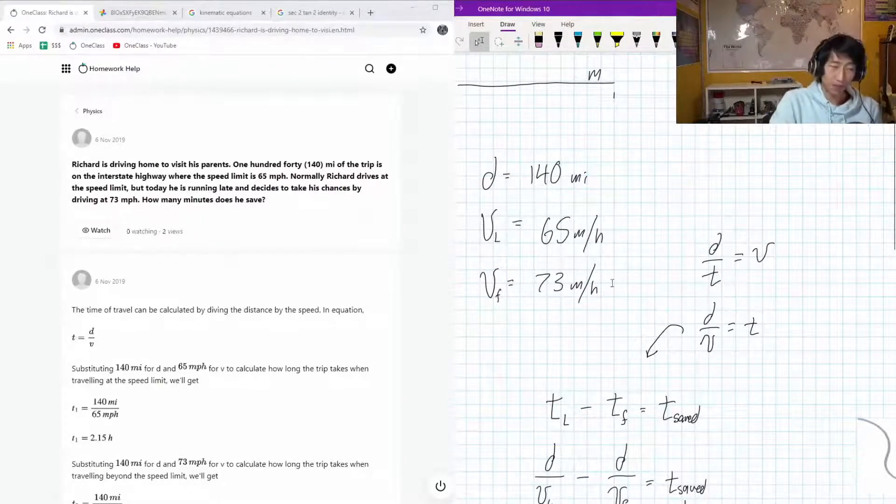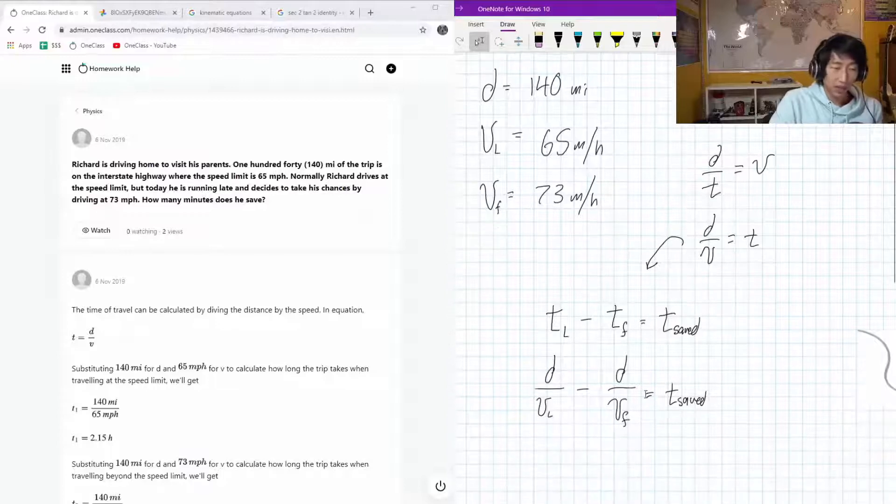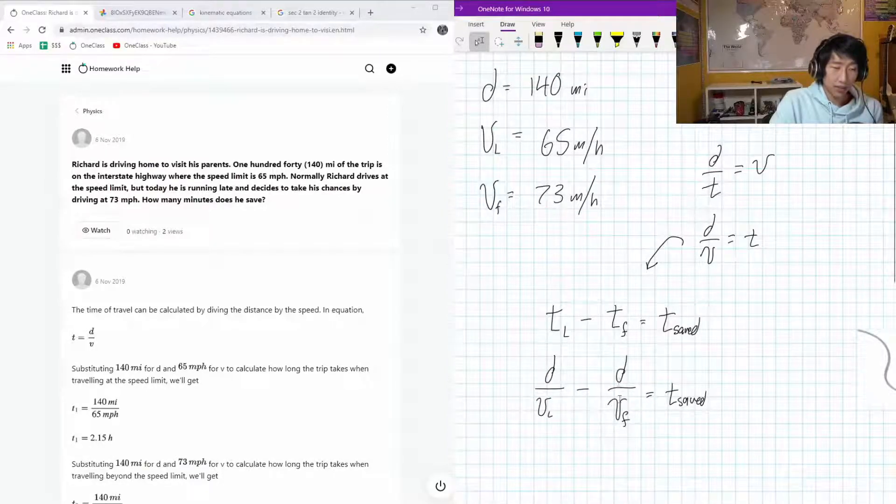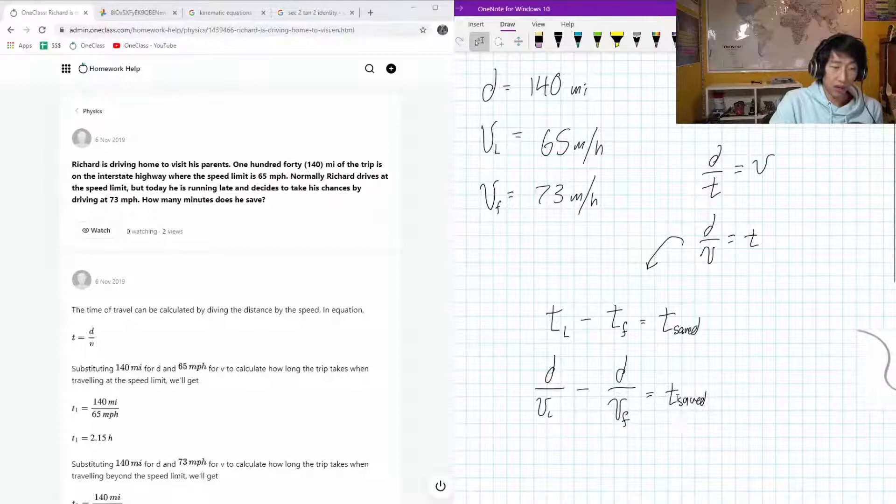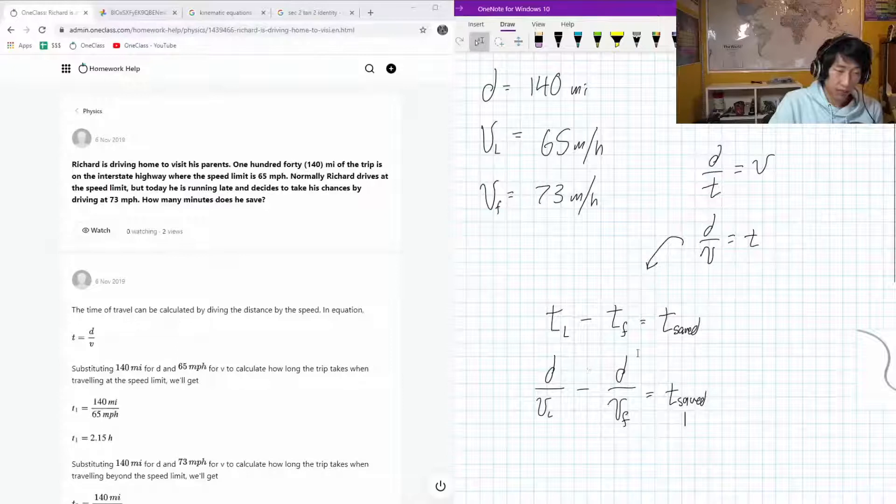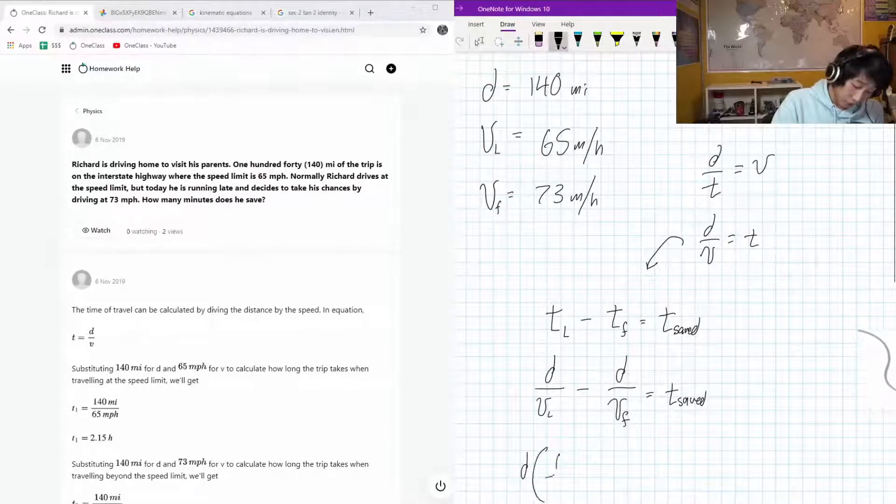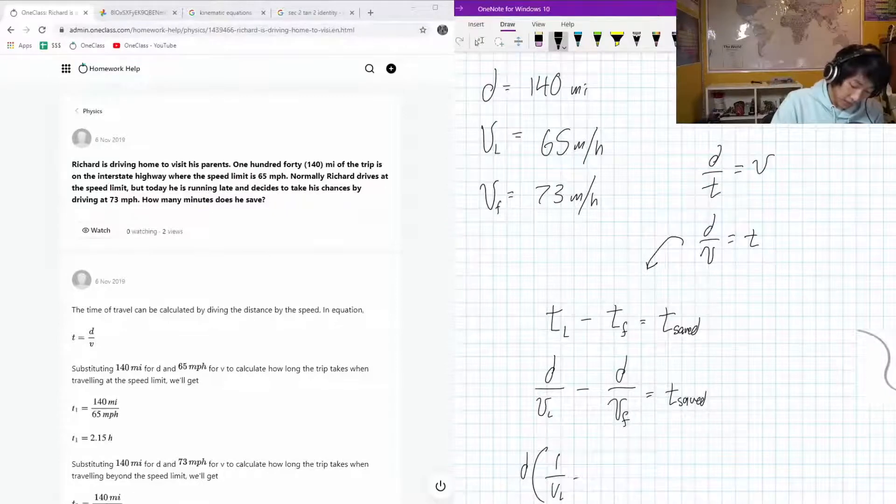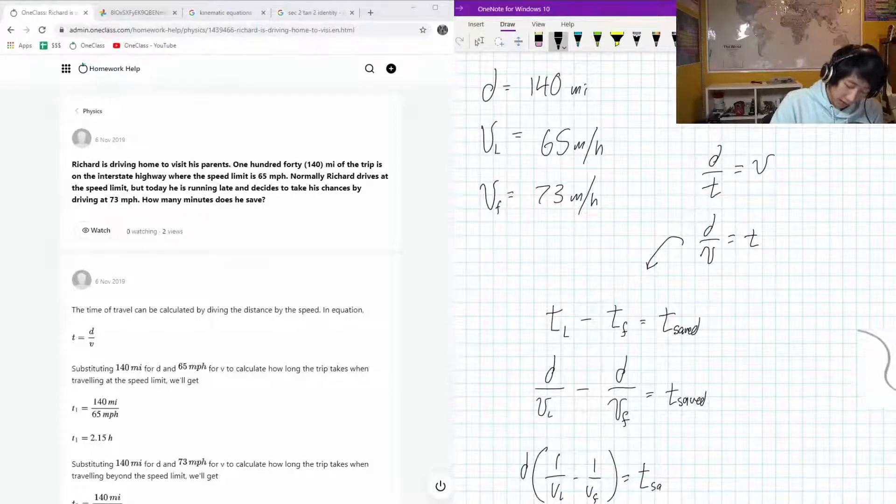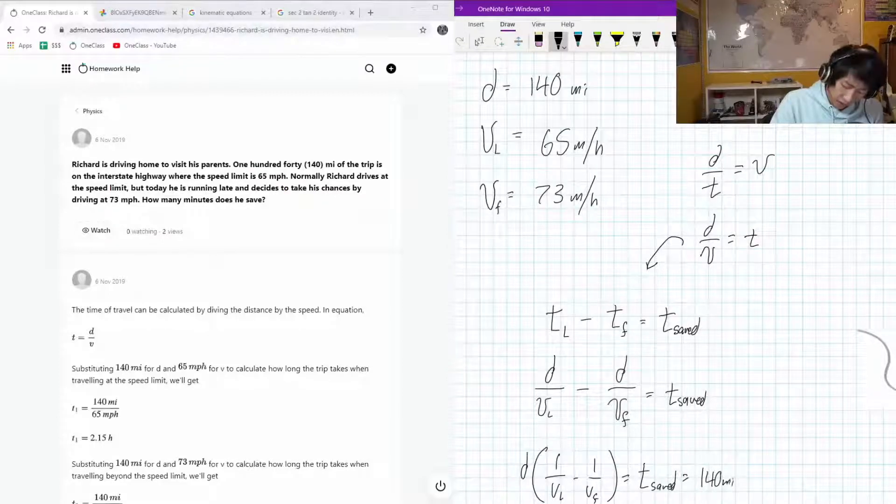Now we just got to sub in these numbers and we'll get our hours that are saved, and then we'll just convert our hours into minutes. In both of these cases we have d, so we can actually factor that out: d times 1 over V_L minus 1 over V_F equals time saved.